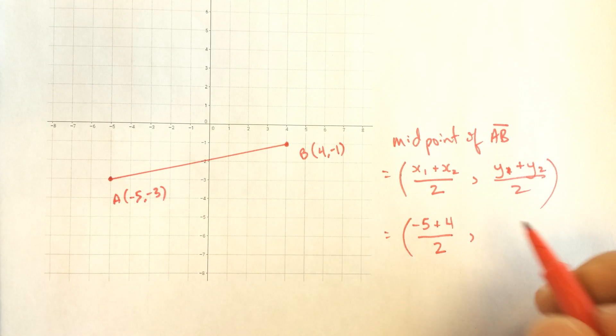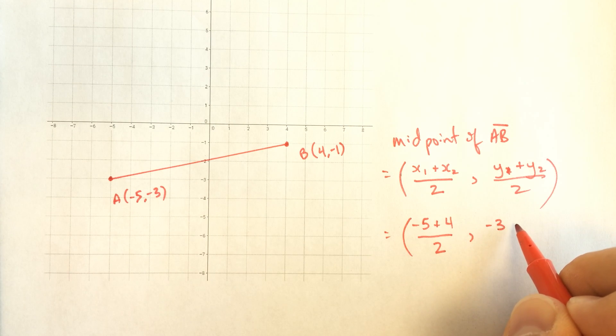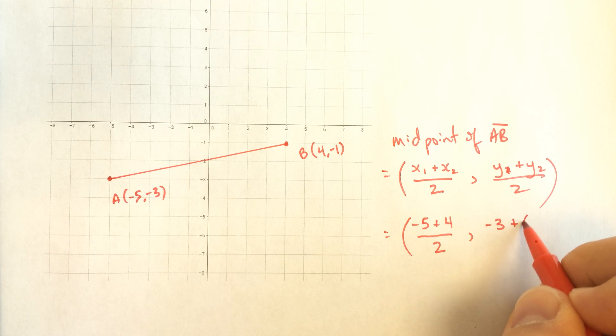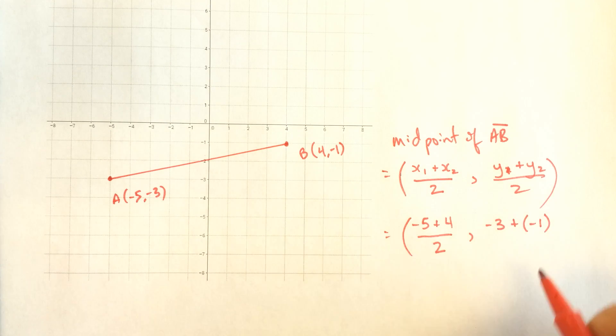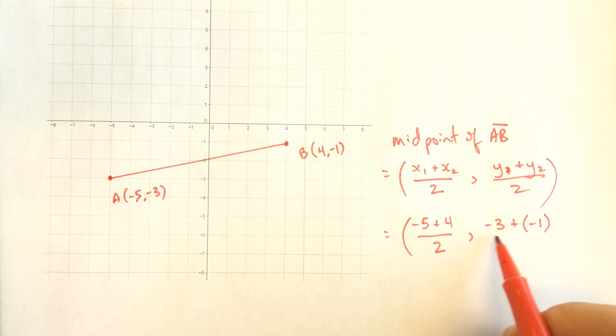y1 is negative 3. y2 is negative 1. So I'm going to write it like this. I could also have written just negative 3 minus 1.